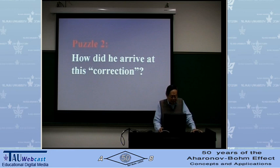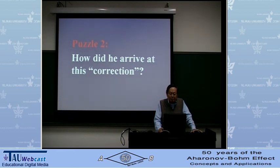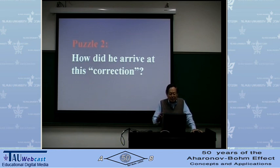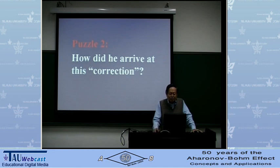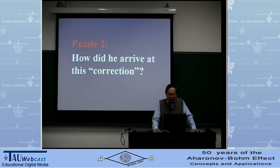A second puzzle: how did Maxwell arrive at this correction? This is a question I've studied for some time without being able to explain. Maxwell evidently, in the first three installments, struggled to make a mechanical model that he thought would in some sense be the analog of electrical phenomena. Perhaps when he tried to study the question of charge conservation, he realized he needed to add an additional term. In my opinion, this is another great puzzle in the history of physics.